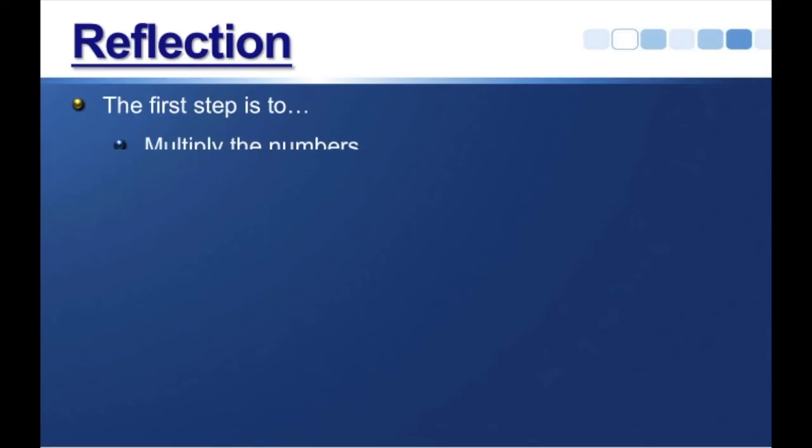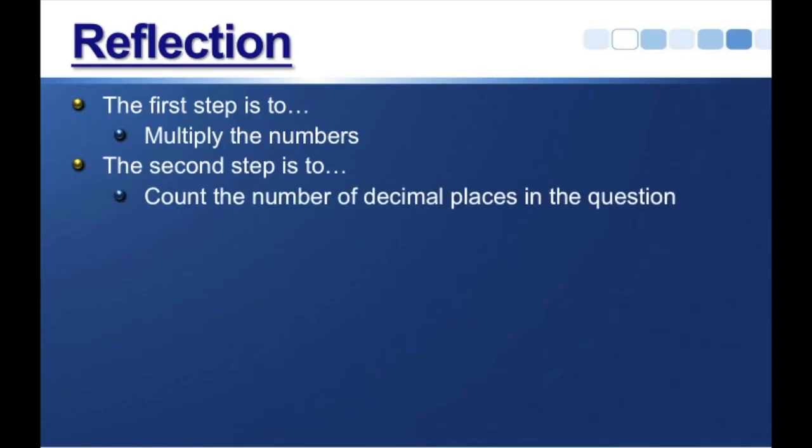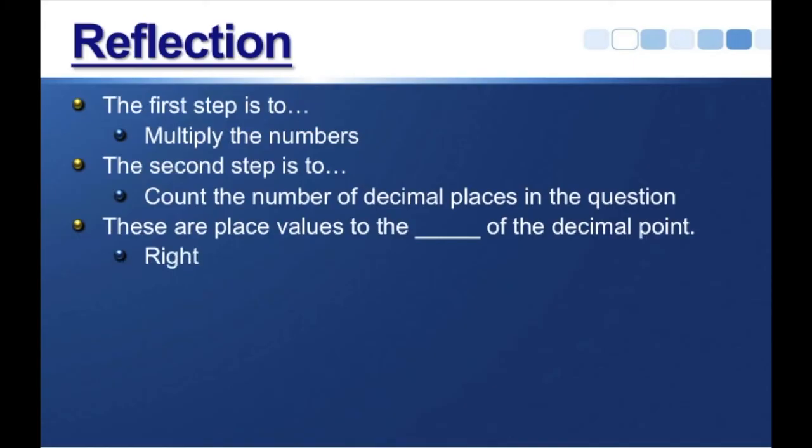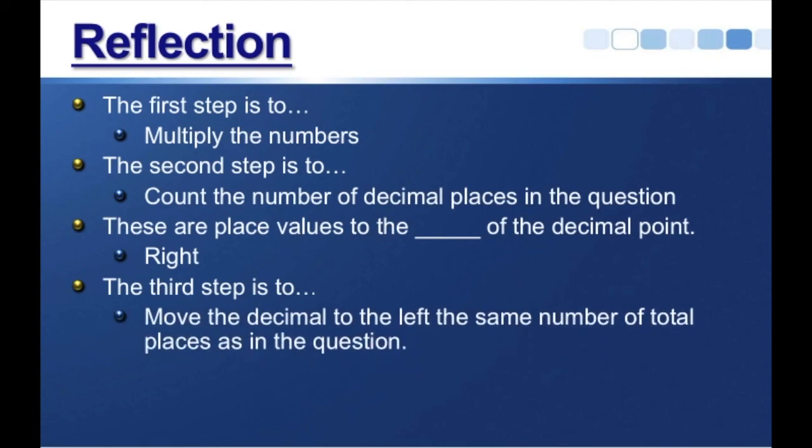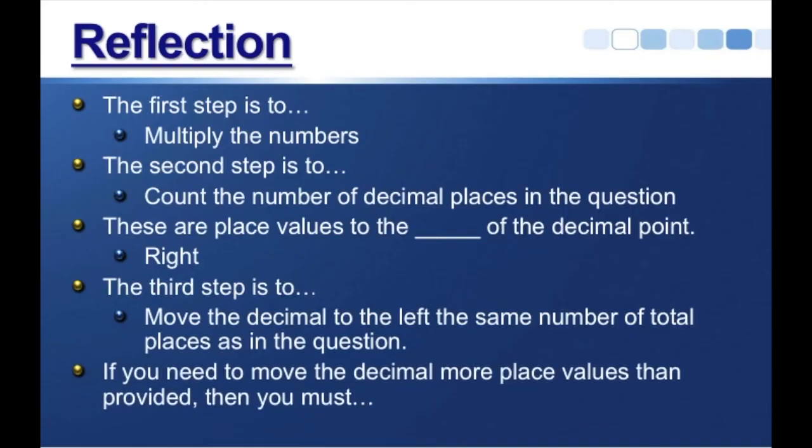The first step is to multiply the numbers, just like you normally would. The second step is to count the number of decimal places in the question. These are place values to the blank of the decimal point. To the right, remember, decimal places are place values that are to the right of the decimal. The third step is to move the decimal to the left, the same number of total places as in the question. And if you need to move the decimal more place values than provided, then you must annex zeros.